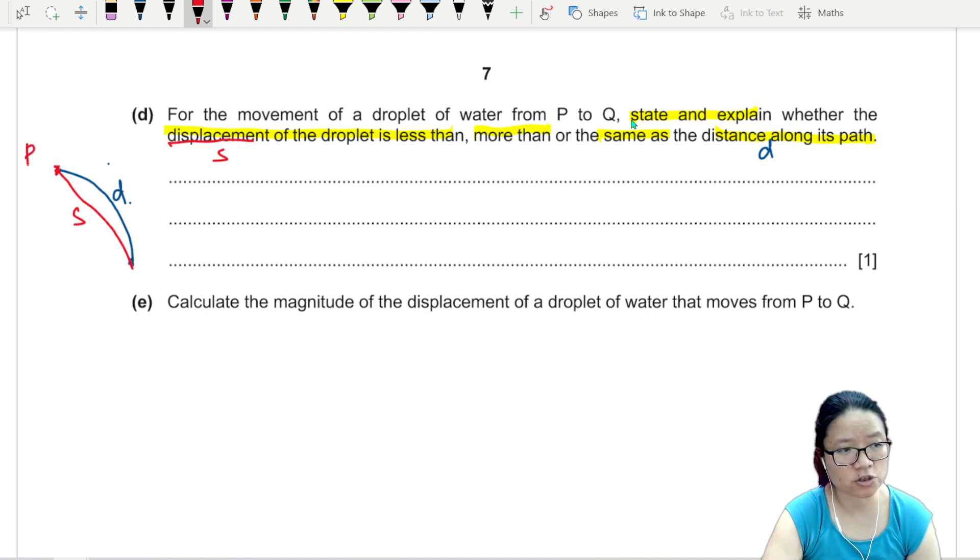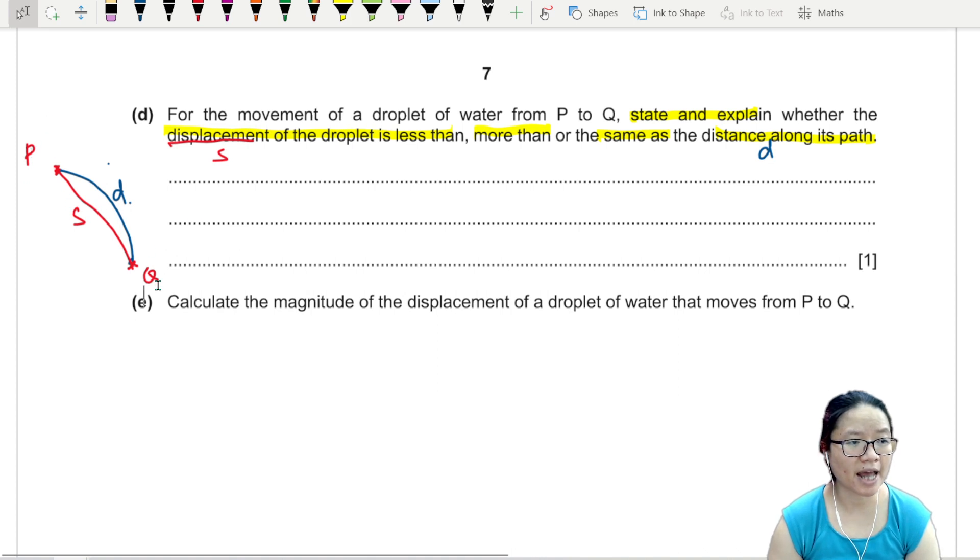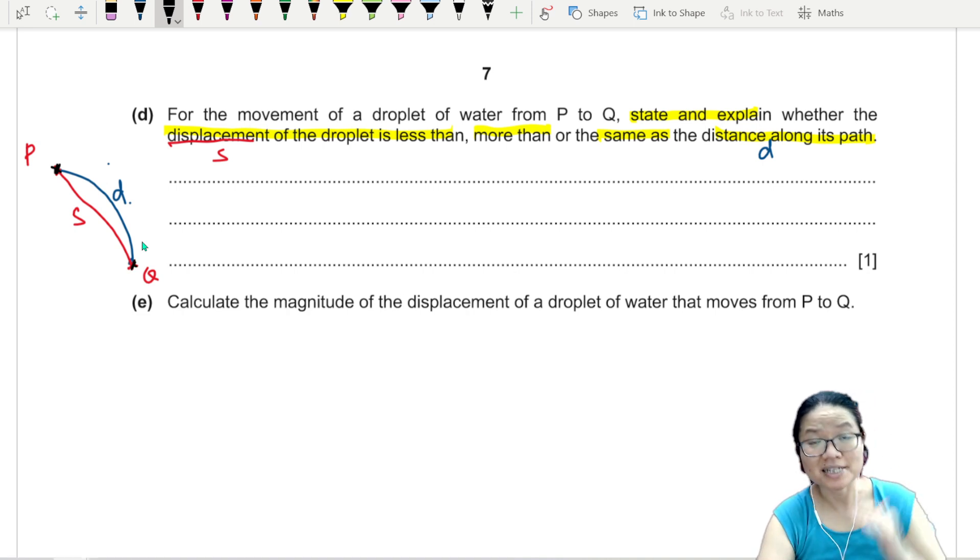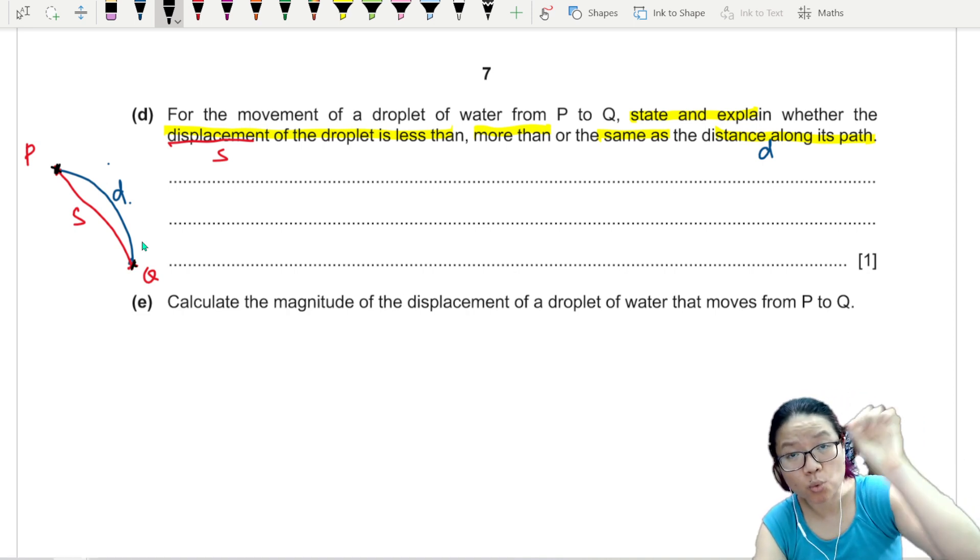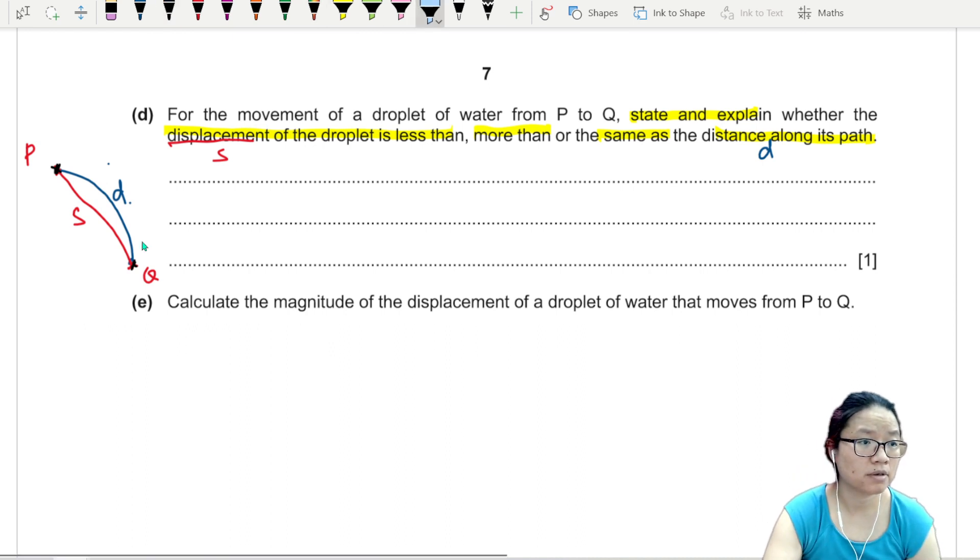Displacement, remember, is always a straight line that connects the beginning, which is P, and the end, which is Q. S is a straight line connecting P and Q. D is the actual places where the water has been.